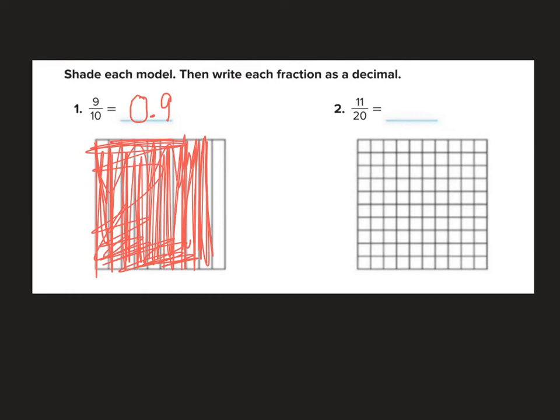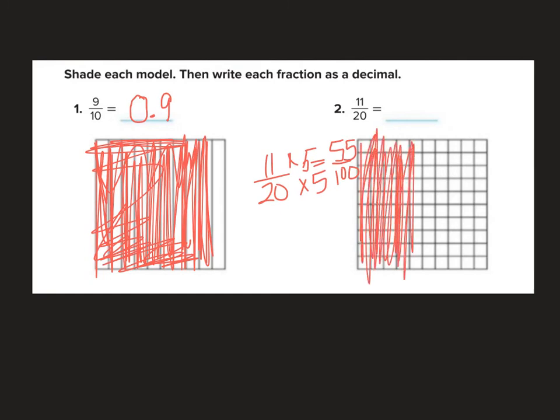Okay, here I have 11 out of 20. 11 out of 20. Now I have 100 boxes here, so I better take 11 twentieths and multiply it by 5 so that I can get 100. So that would give me 55 hundredths. So I just shade in 55, so 5 groups of 10, 4, 5, and then 5 extras. Okay? So I am going to say this is the same as 55 hundredths, which is the same as 0 and 55 hundredths.